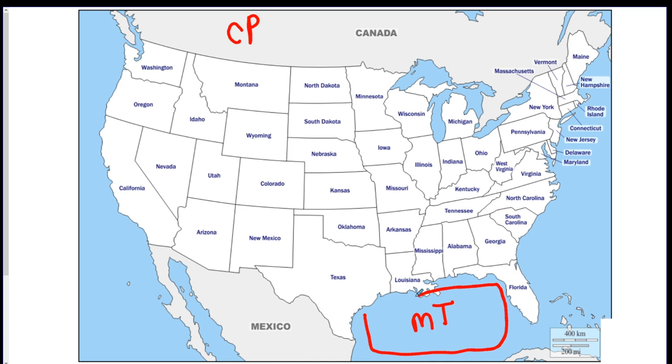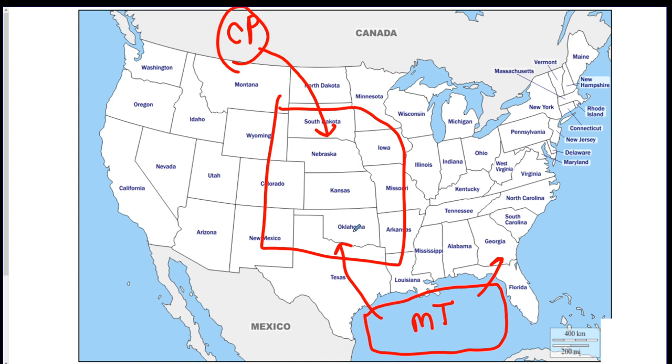This MT air mass tends to come up into the middle of the United States. It could go this way sometimes. And then the CP tends to come down over the United States. So when a CP air mass and an MT air mass sort of meet over in here, this is how tornadoes sort of develop. This is the reason why this area too is tornado prone. But CP from Canada, MT from Gulf of Mexico.